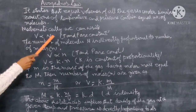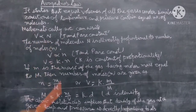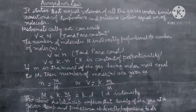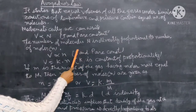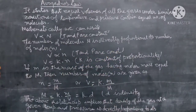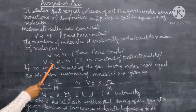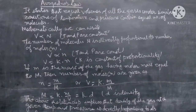That is why we can replace capital N by small n, where small n is the number of moles. So we can write V is directly proportional to n when temperature and pressure are constant. Removing the proportionality sign, we can write V is equal to K into n, where K is the constant of proportionality.